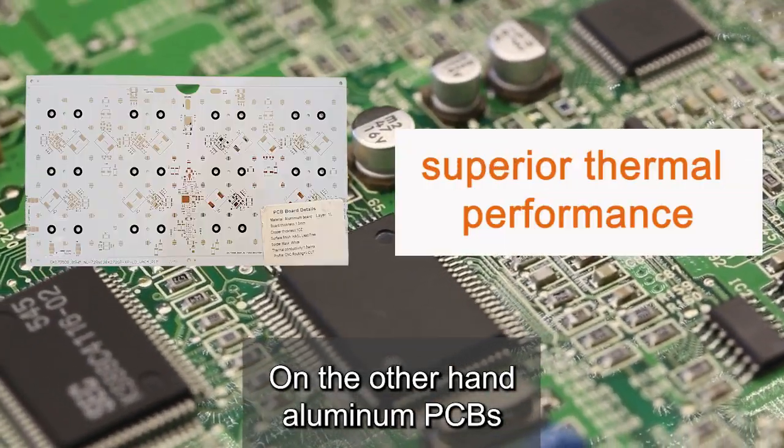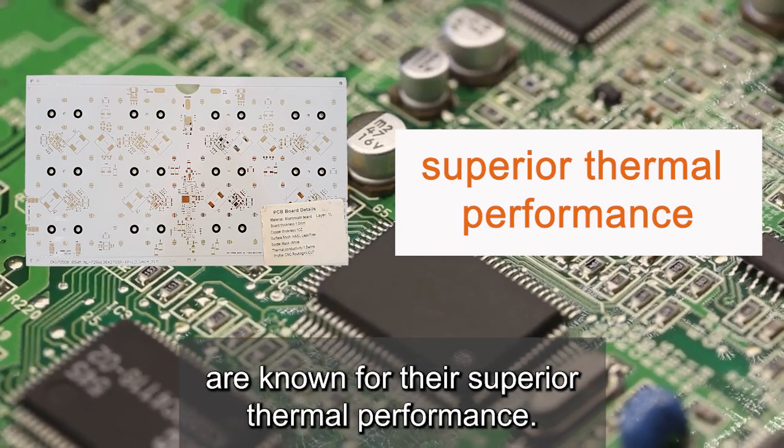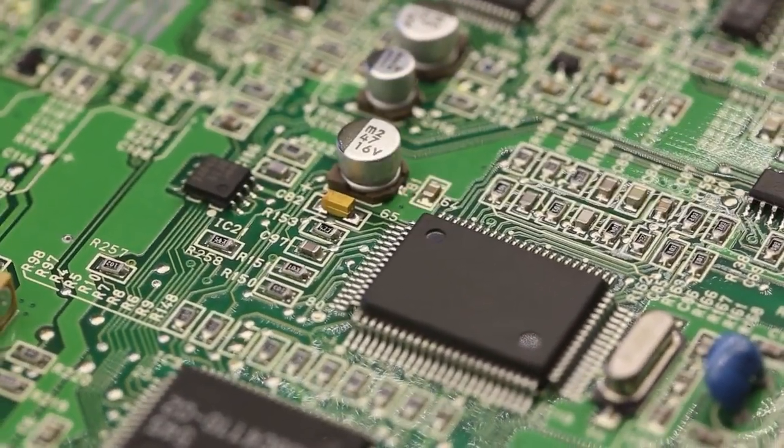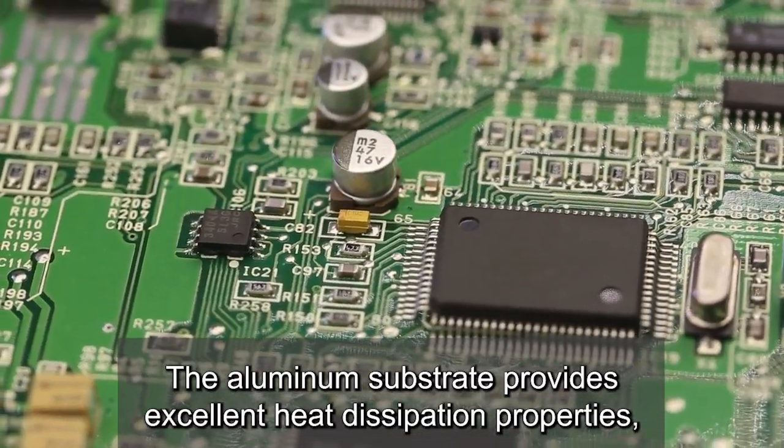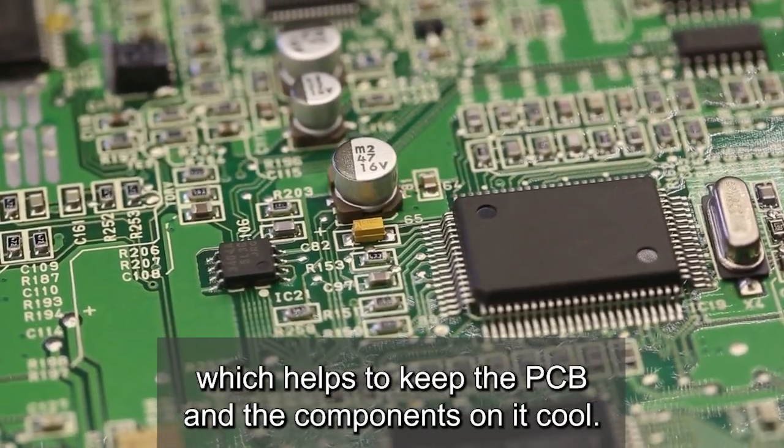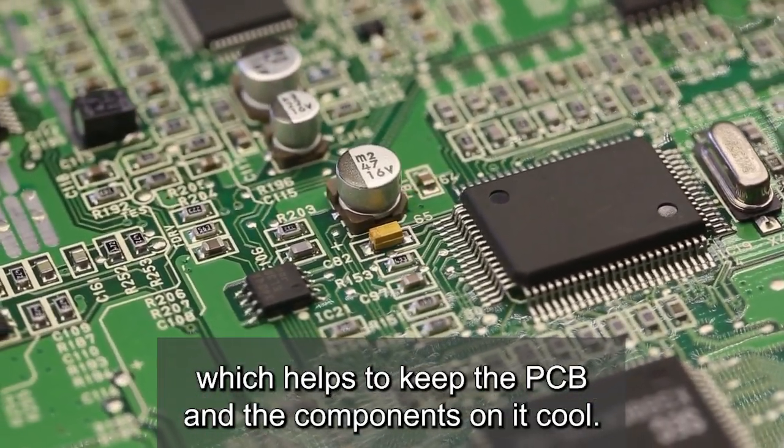On the other hand, aluminum PCBs are known for their superior thermal performance. The aluminum substrate provides excellent heat dissipation properties, which helps to keep the PCB and the components on it cool.